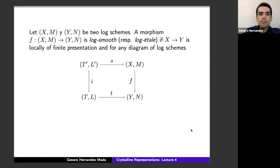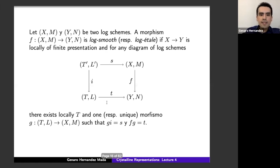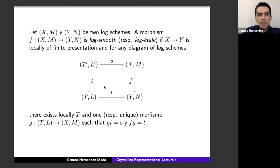A morphism from log scheme (X, M) to log scheme (Y, N) is called log smooth — or respectively log étale — if the map of schemes is locally of finite presentation, and for any diagram of log schemes analogous to the one defining usual smoothness (but now with log structures on all maps), there exists a lifting. If such a lifting exists, the map is log smooth; if it is unique, it is log étale — a familiar definition, but everything equipped with log structures.